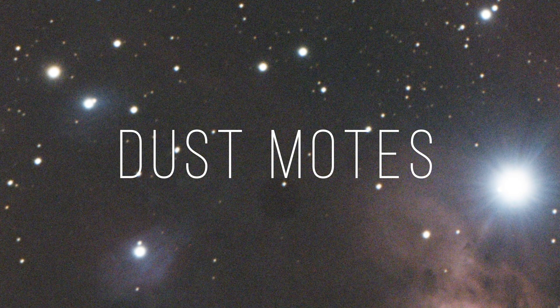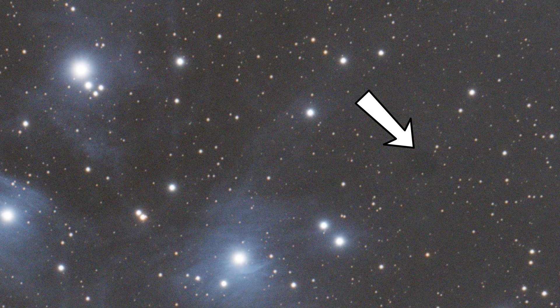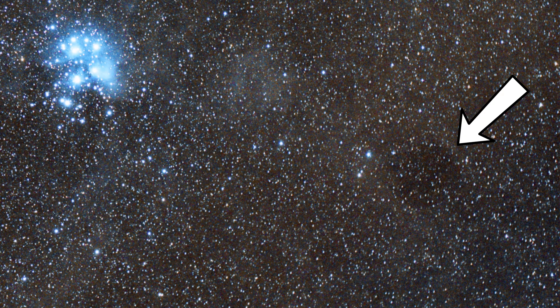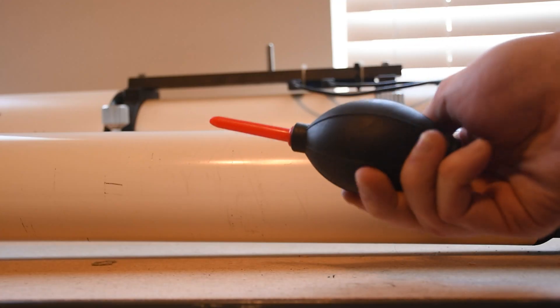Next we have dust motes. These are strange artifacts caused by something blocking the light before it hits your camera sensor, usually bits of dust, a hair, or something on your filter or camera sensor. They are not caused by dust on your lenses or primary mirror. To fix this, you should take flats, which correct for the loss of illumination — you should be taking flats regardless. You can also attempt to clean your optics or camera sensor using an air bulb to blow the dust or hair away. Don't use a rag or paper towel, or you can scratch whatever you're trying to clean.